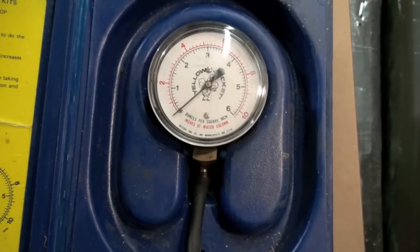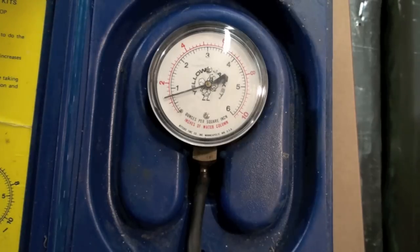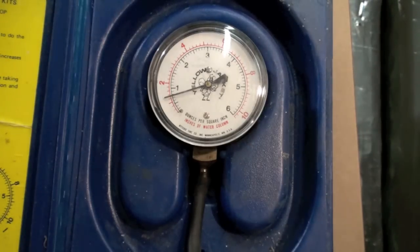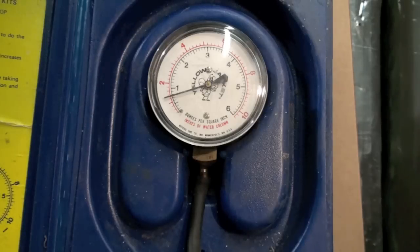We're set up with the Ritchie gauge. Inducer is on, hot surface igniter's on, should be lighting off here. There we are. And it looks like we're right about 1.25.